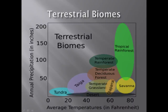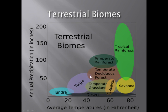Terrestrial biomes are ones on land. They are often named for major physical or climatic factors and for their vegetation. Terrestrial biomes usually grade into each other without sharp boundaries and can be characterized by distribution, precipitation, temperature, plants, and animals.